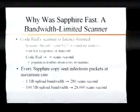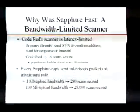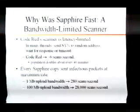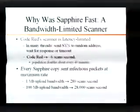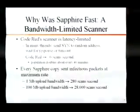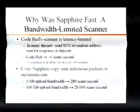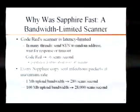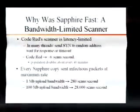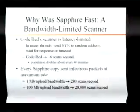SAFIRE was so fast simply because it was bandwidth-limited. Code Red — everybody's favorite worm — was latency-limited. Each thread would send out a TCP SYN to a random address and wait for either a response or a timeout. So it's limited by network latency or the TCP timeout. Even though Code Red had over 100 threads, the average copy could only scan at about 6 scans per second, with a doubling time of about every 40 minutes. While Sapphire, being effectively a single while-loop, is bandwidth-limited. With a 1-megabit upload you'd see 280 scans per second; with 100-megabit upload, 28,000 scans per second — and we actually saw machines transmitting at 28,000 scans per second over 100-megabit Ethernet.